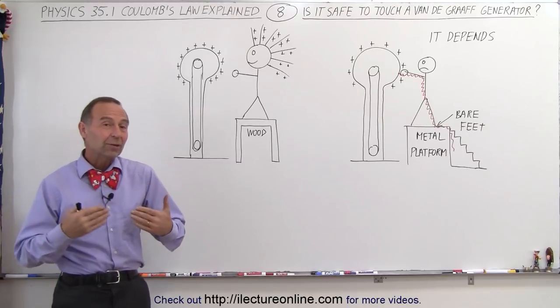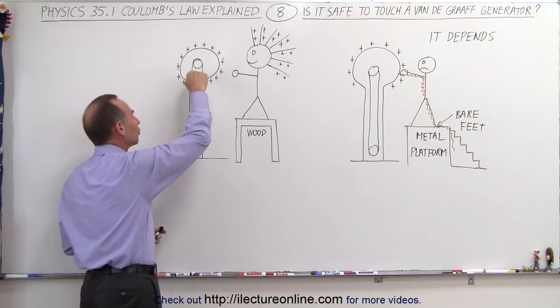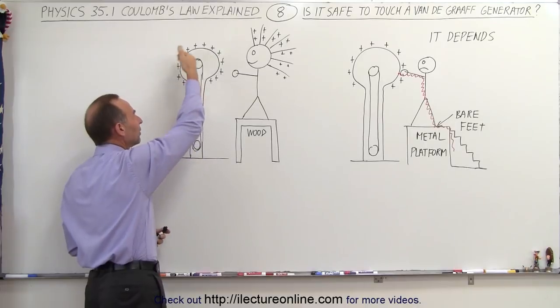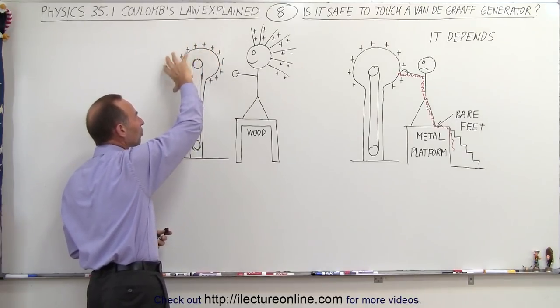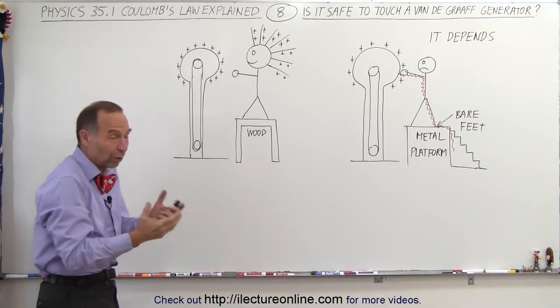A Van de Graaff generator is a generator that will, through a belt, transport extra charges up to the top sphere, which is usually a metal sphere. Those charges are deposited onto the sphere, so you have a whole lot of charges built up on the very top of the Van de Graaff generator.